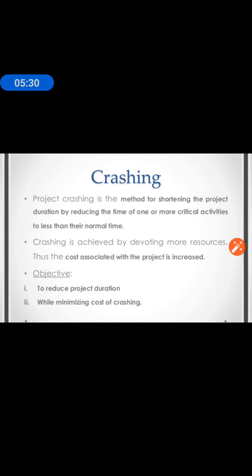The objective is to reduce the overall project duration while minimizing the cost of crashing. In one project or network, you can find various crashing stages — first stage crashing, second stage crashing, third stage crashing. At each stage, you calculate the project duration and project cost. We compare the duration and cost across all stages, and finally decide at which stage to carry out the crashing of the network.